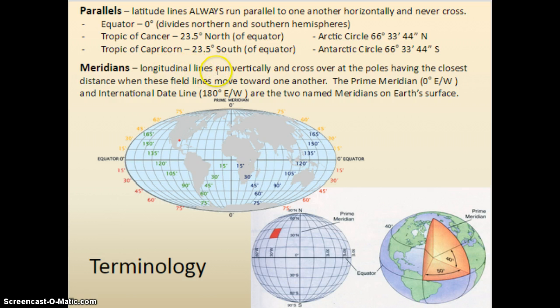These are simply meridians that are longitude lines that do cross over at the poles. These are different than parallels that never cross. The prime meridian here is zero degrees east-west, and the international dateline is 180 degrees from it, so it's on the other side of the Earth.